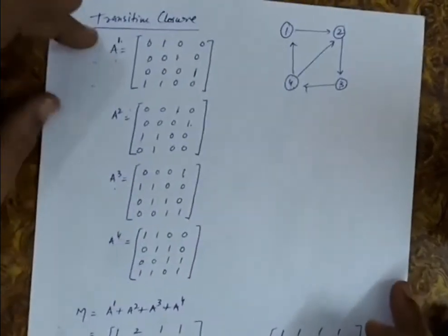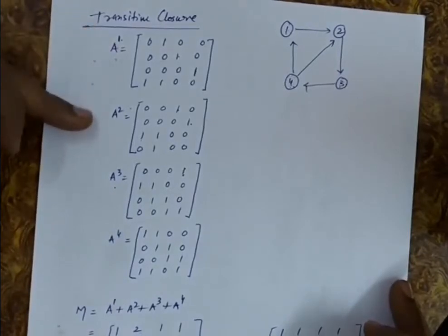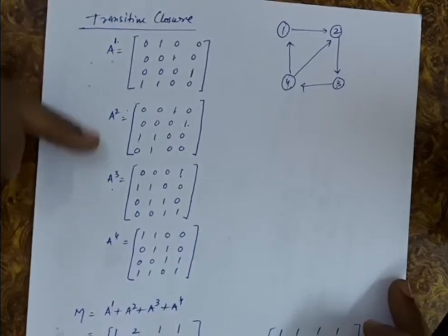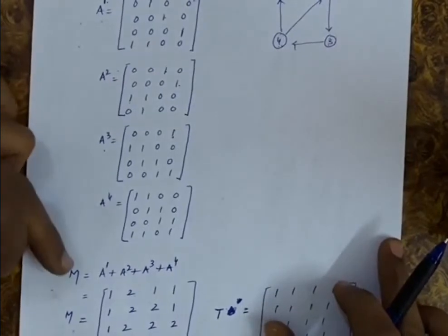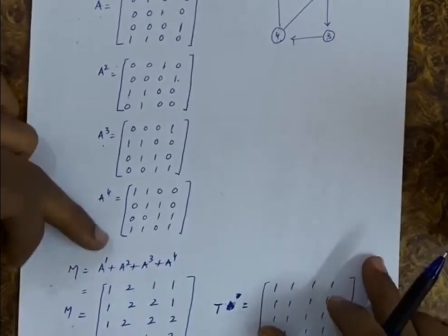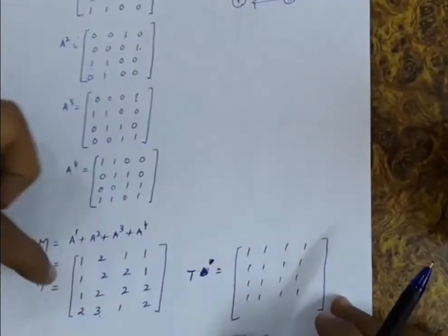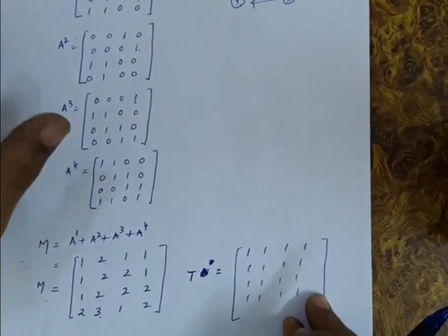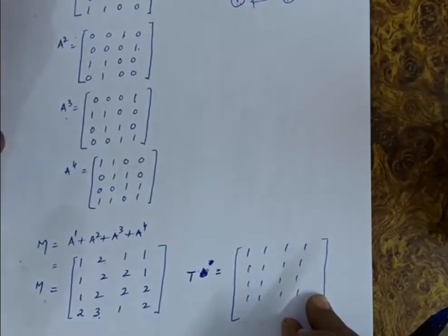So what have we done? We computed the A matrix showing all paths of length 1, then A squared for paths of length 2, A cubed for length 3, and A4 for length 4. The M matrix is computed by adding all four matrices. All non-zero entries of M are converted to 1; all zero entries remain 0.